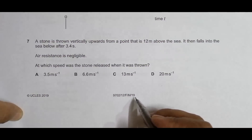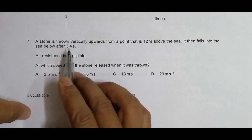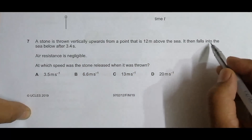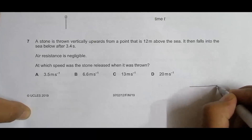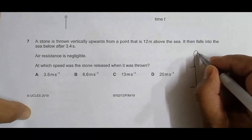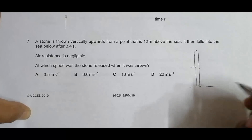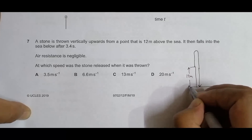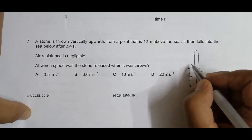This is an A-level 2019 February/March paper, question number 7. A stone is thrown vertically upward from a point 12 meters above the sea, and it falls into the sea below after 3.4 seconds. So the overall motion is: from a cliff, the stone is thrown upward and then comes back down and falls into the sea. This height is 12 meters, and we need to find the speed at which the stone was released.